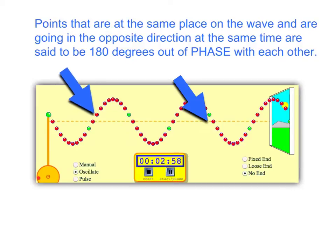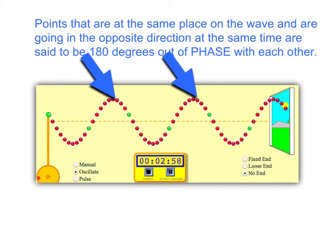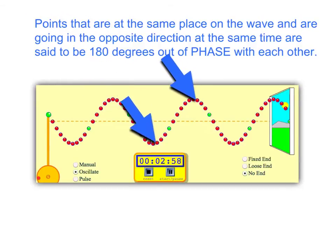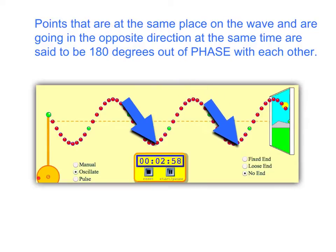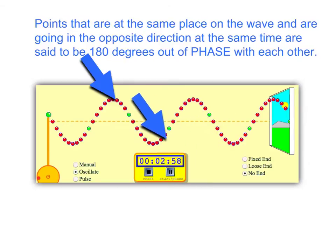Crests are always in phase with each other. Troughs are also always in phase with each other. A crest is always 180 degrees out of phase with a trough.